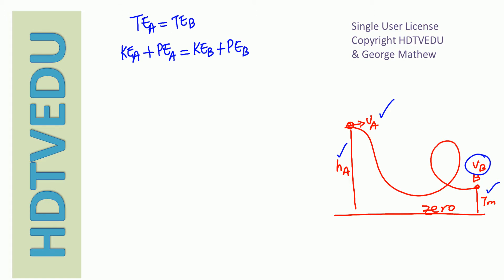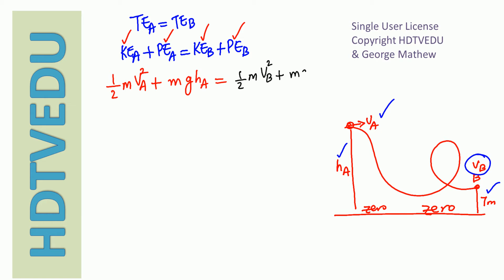Does it have kinetic energy at point A? Yes, it is moving. Does it have potential energy at point A? Yes, because the zero level is right here. Does it have kinetic energy at point B? Yes. Does it have potential energy at point B? Yes. So the expression is: one-half m times speed at A squared, plus mass times g times height of point A, equals one-half m times speed at B squared, plus mass times g times height of point B from the zero level.